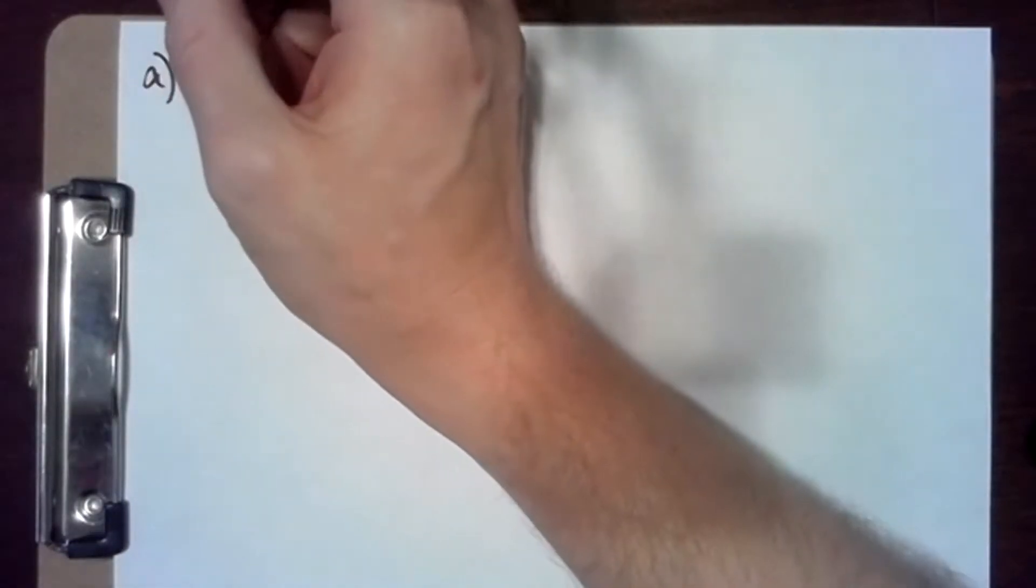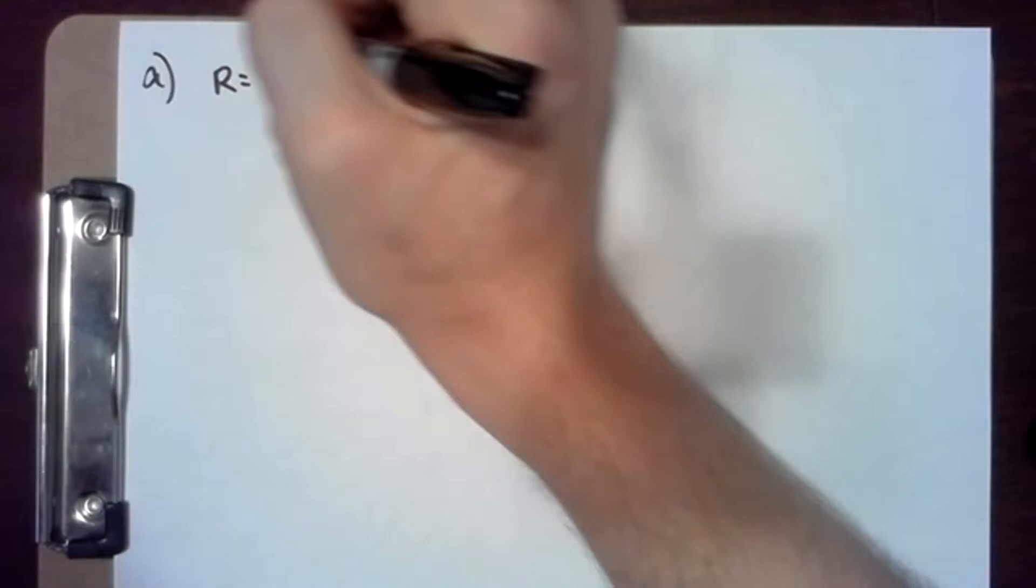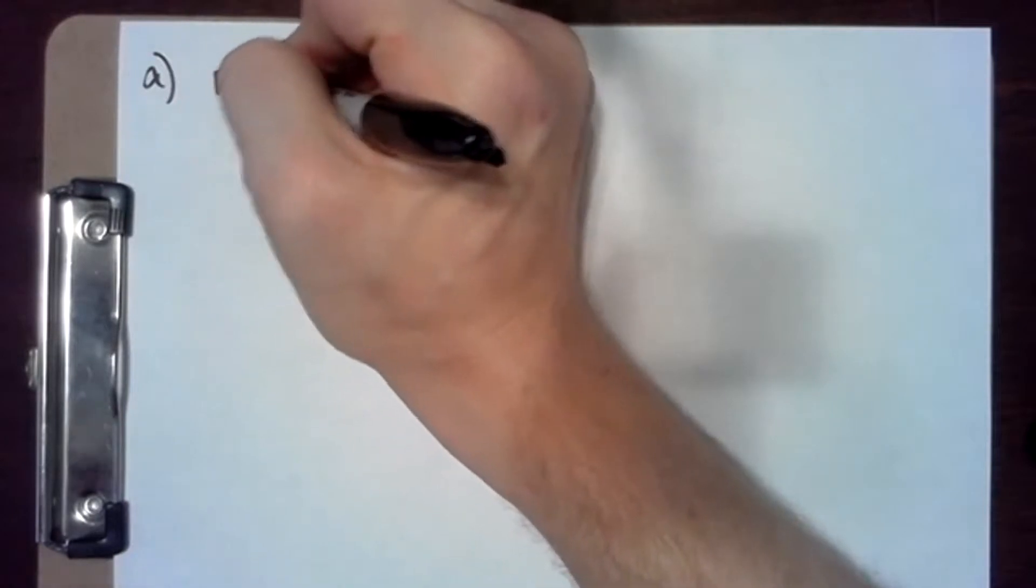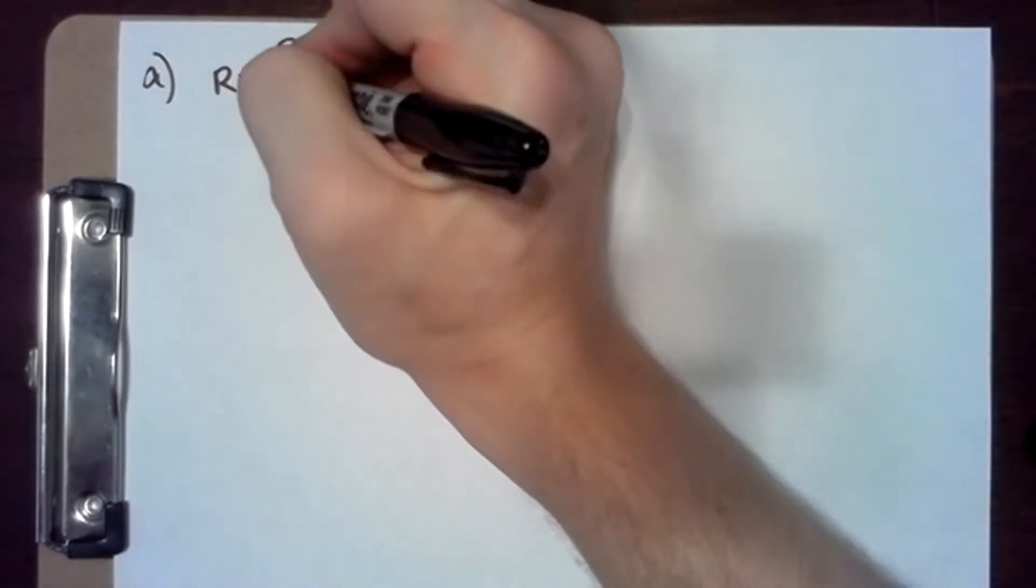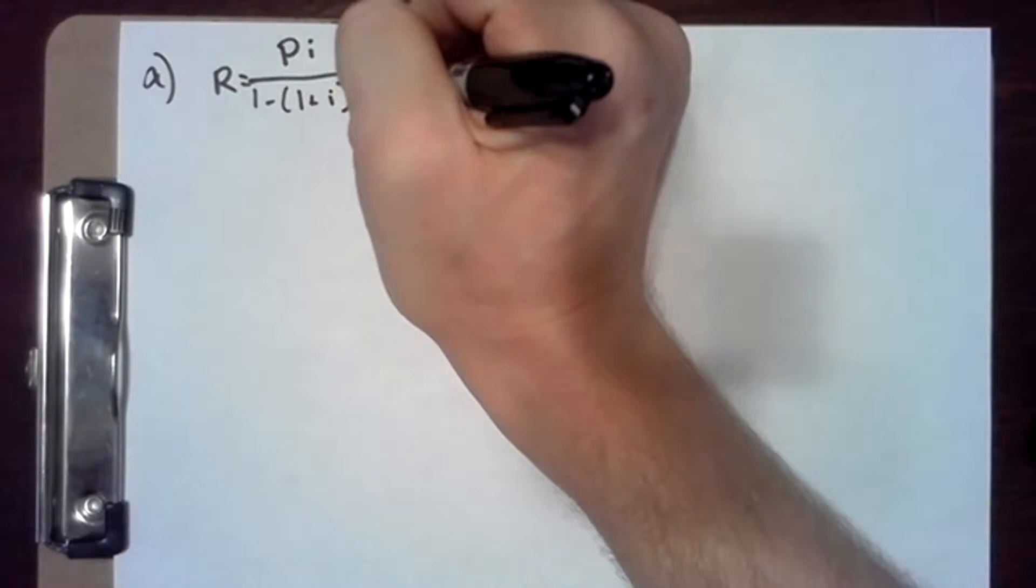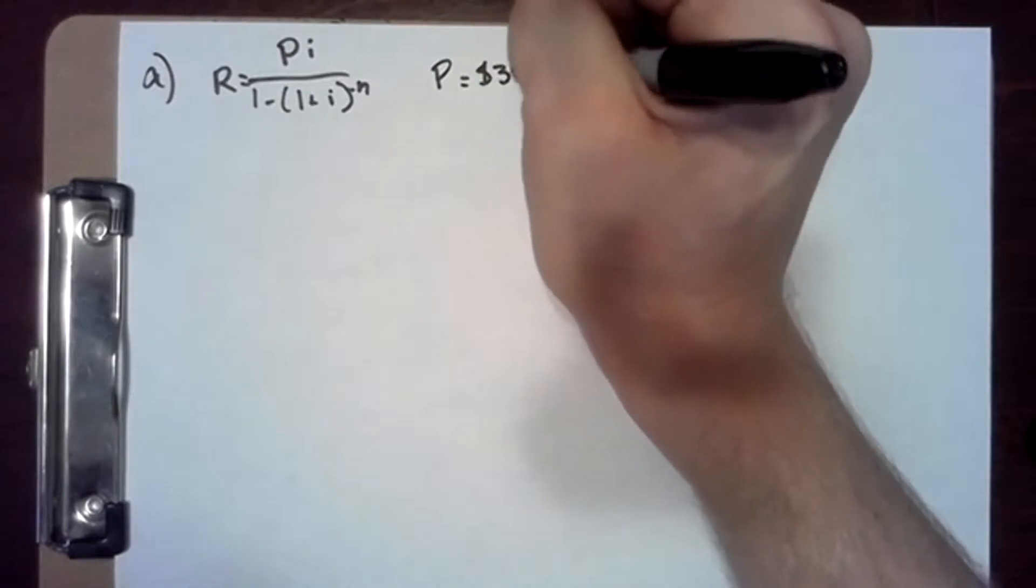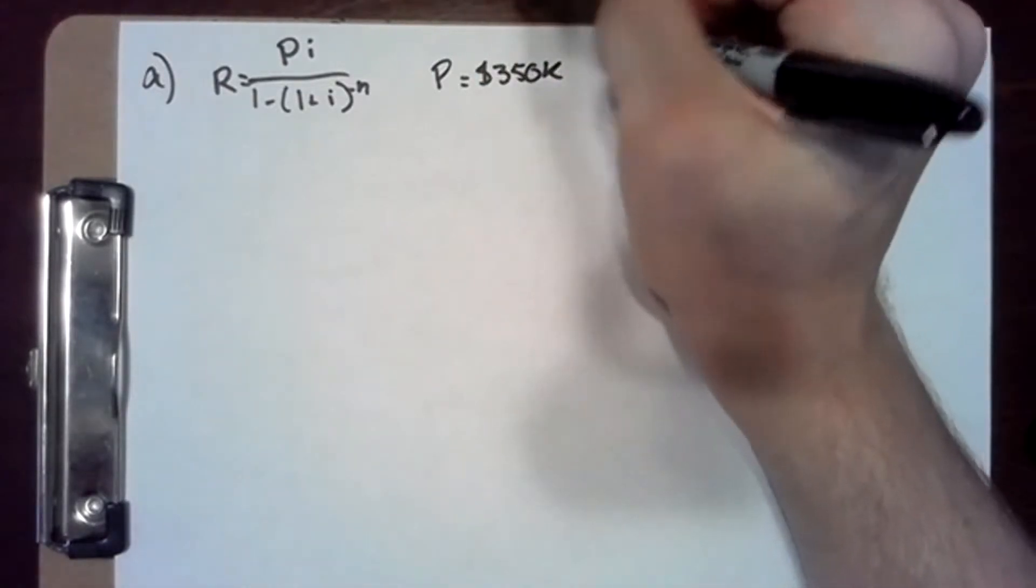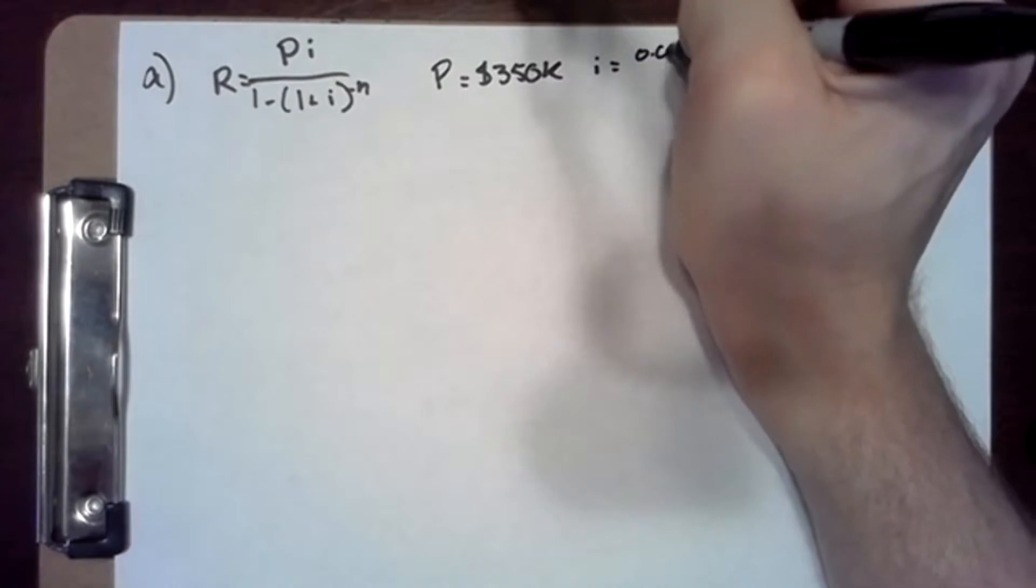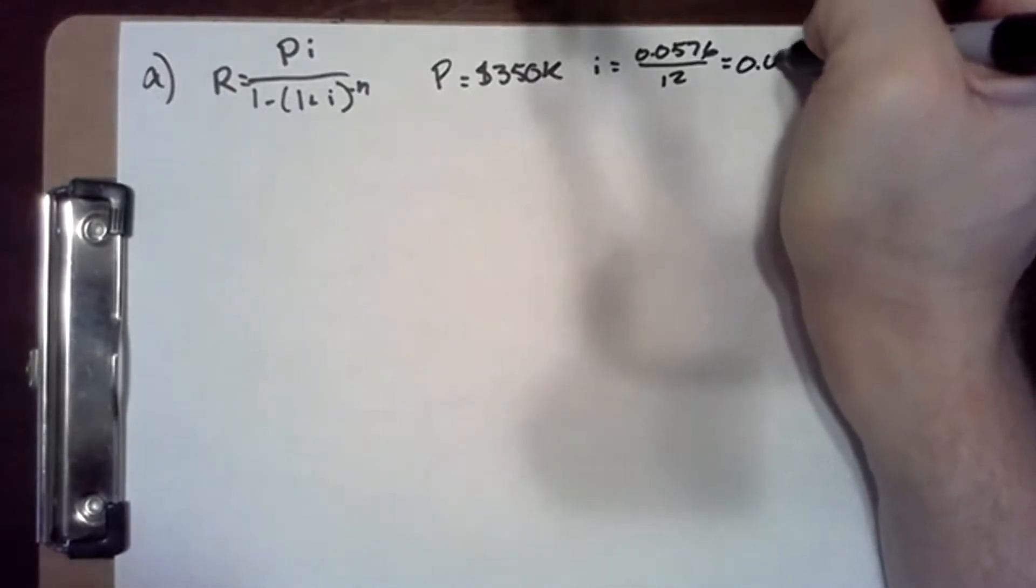First, we find the Campbells' monthly payment on the original loan amount. R equals P times i over one minus one plus i to the negative n. This is our amortization formula. Here P is $350,000, i is 0.0576 over 12, which is 0.0048.